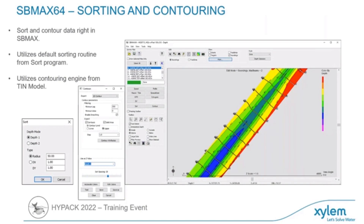Inside of SB-MAX, one of the biggest features we've added is the ability to do contouring and sorting from within SB-MAX 64. You no longer have to go into TIN Model or the sort program to get these two products out the door. It's very easy, very straightforward — a one-stop shop.